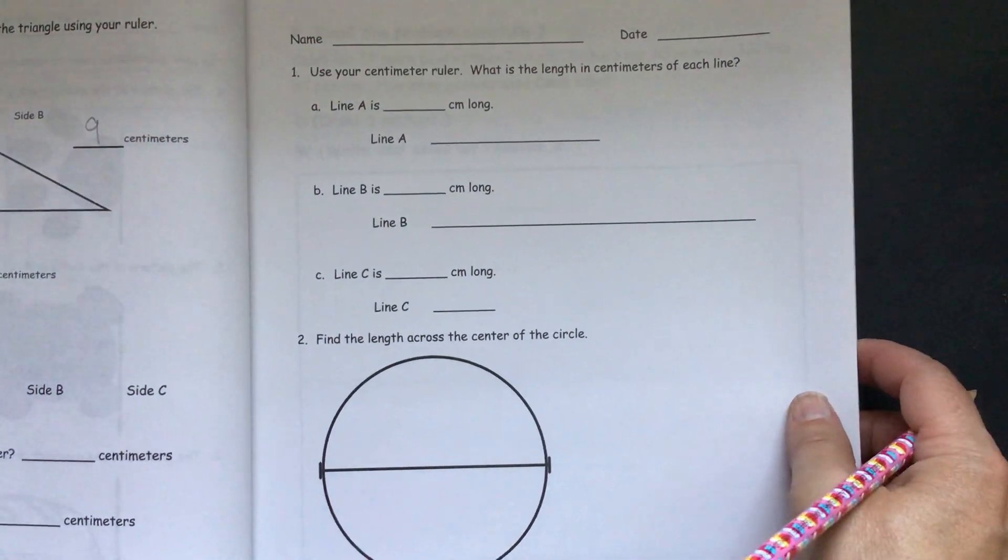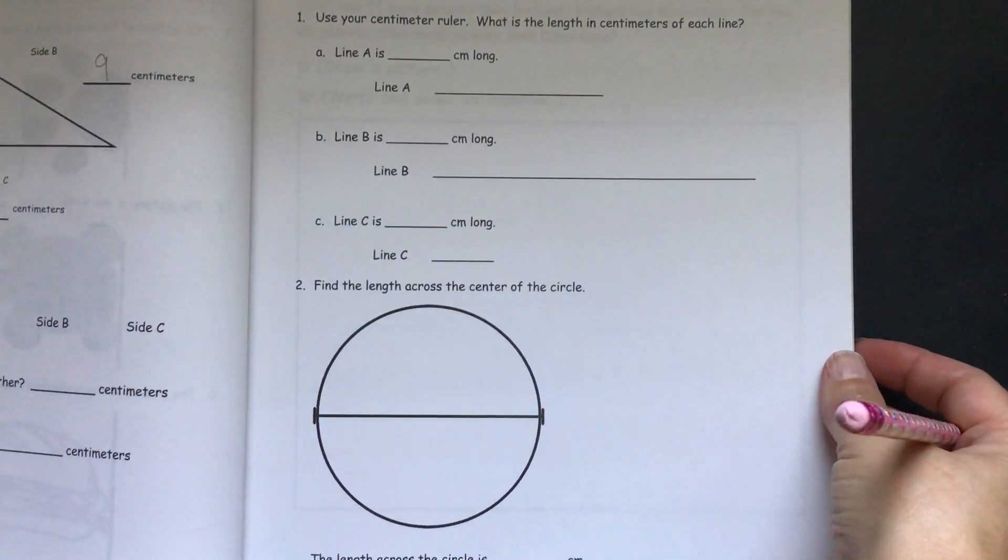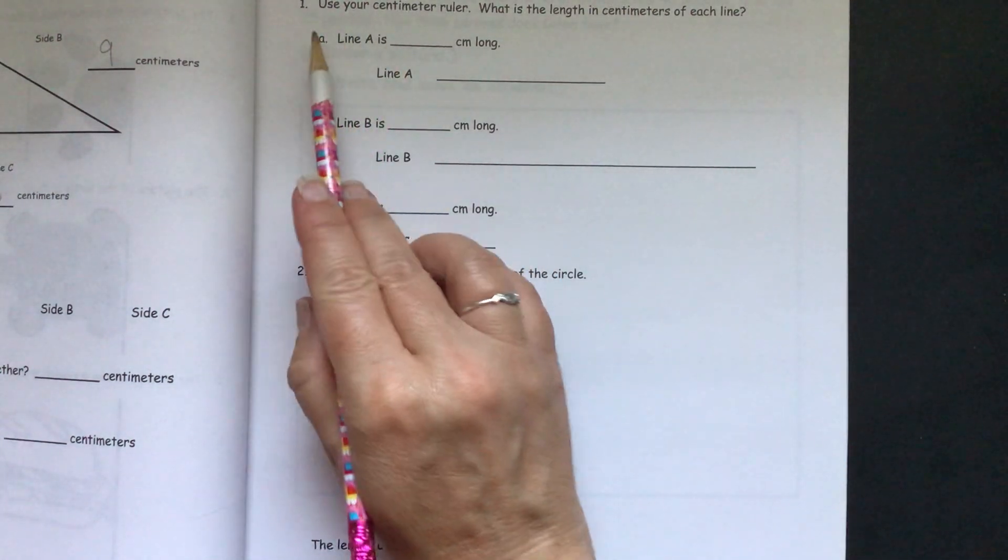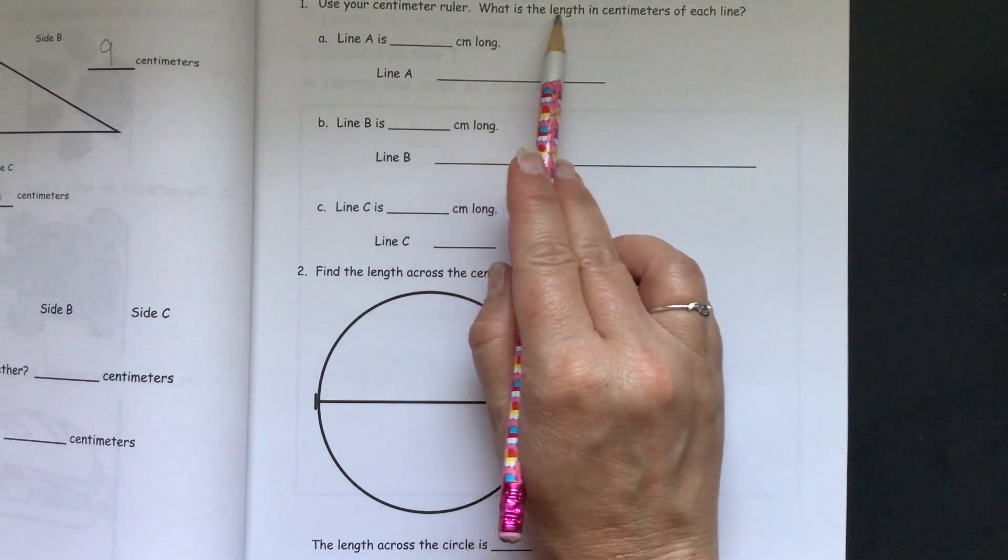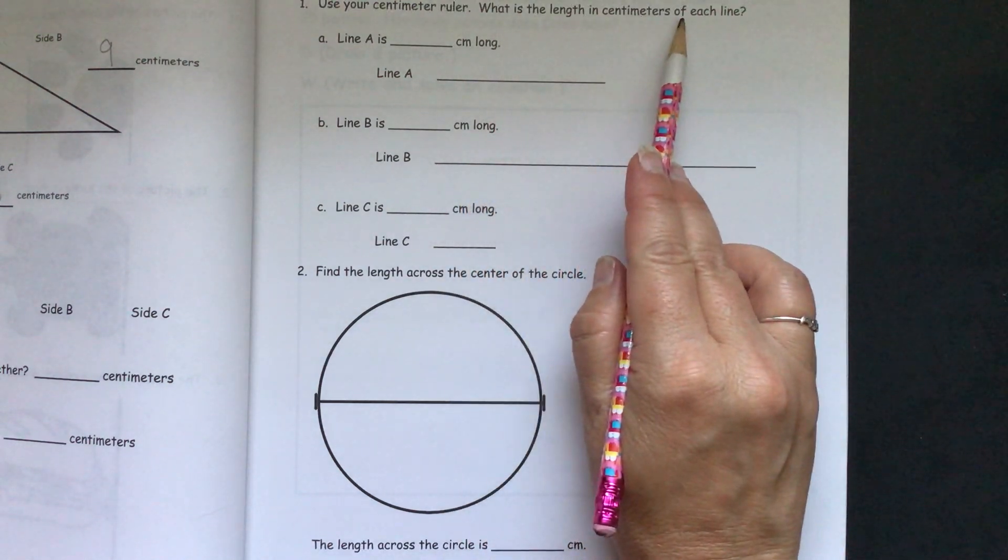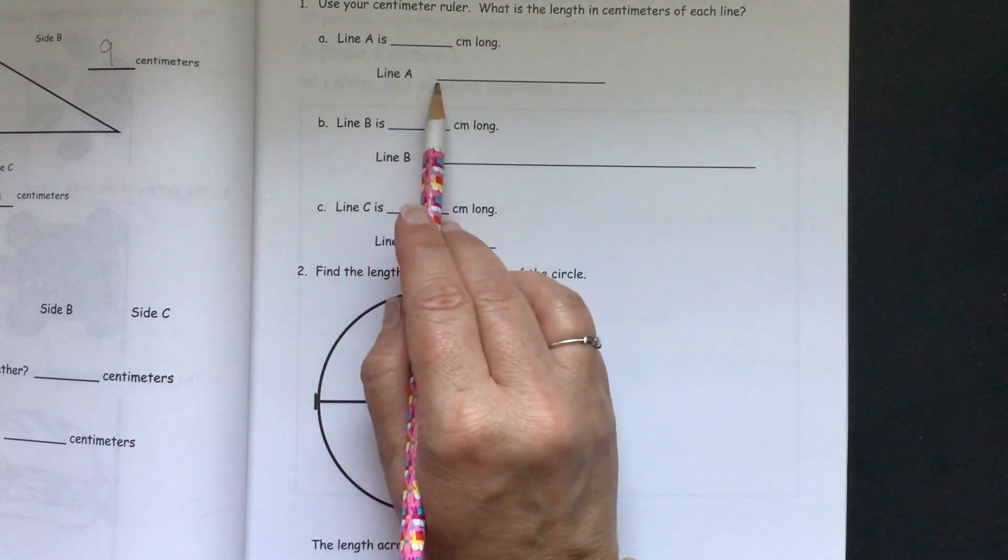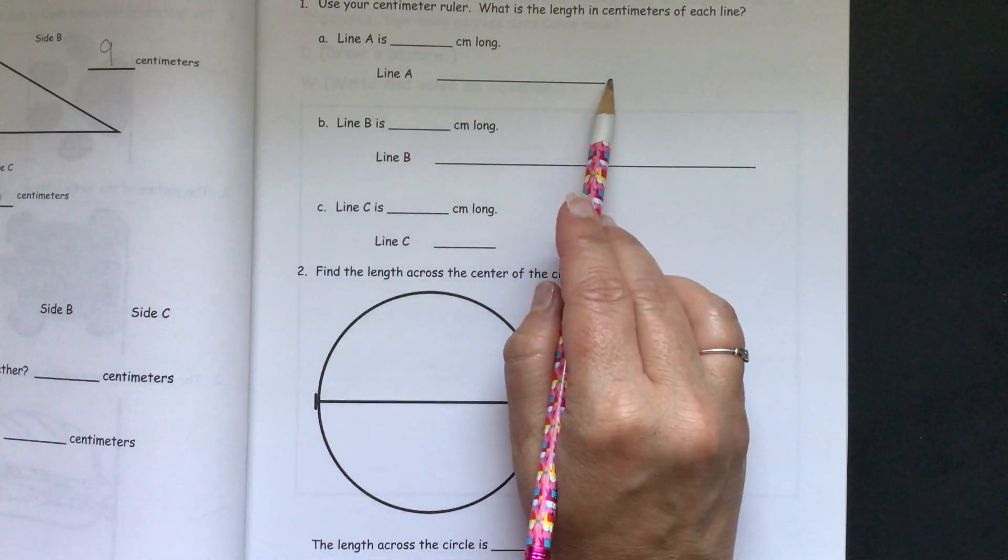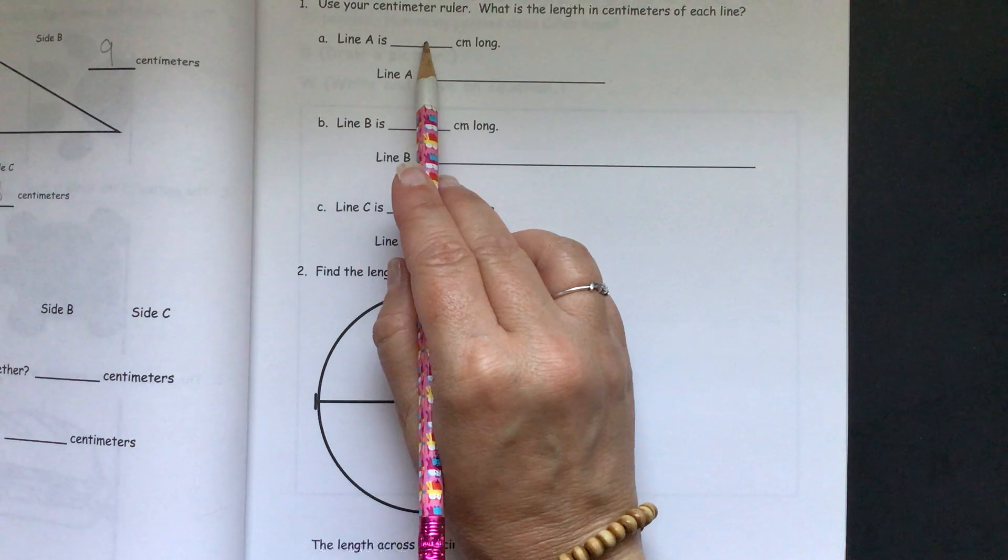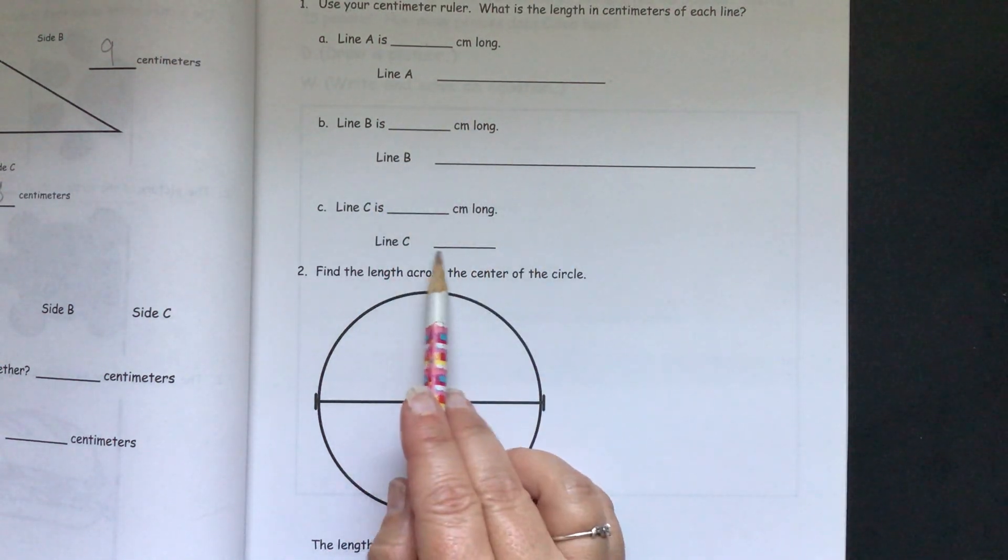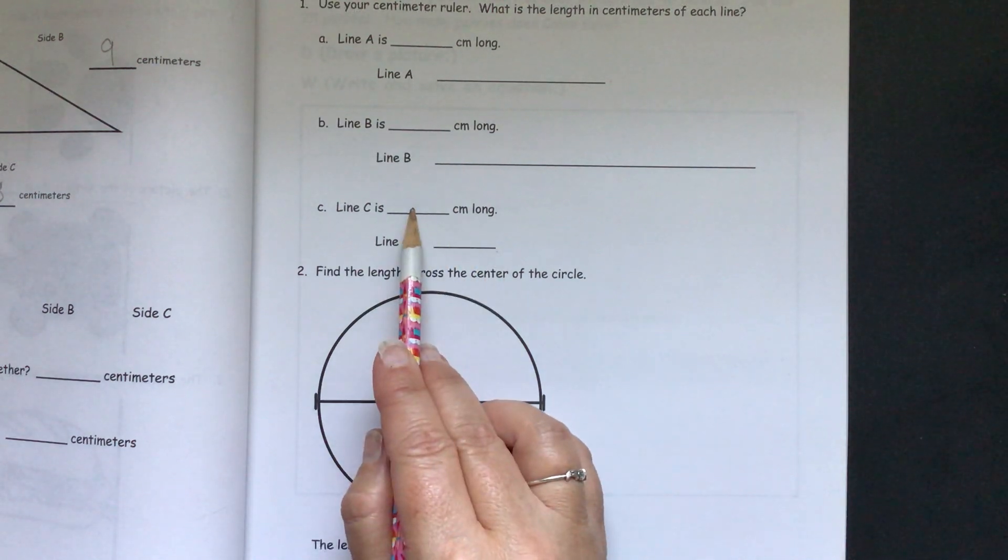And then, for your exit ticket, the directions say, use your centimeter ruler. What is the length in centimeters of each line? This is line A. You need to measure it with your centimeter ruler. Put the answer here. This is line B. Put your answer here. And line C. You put your answer there.